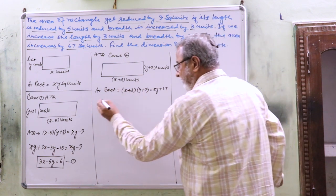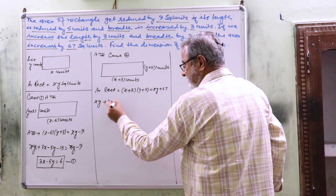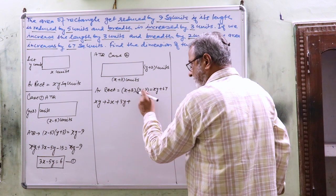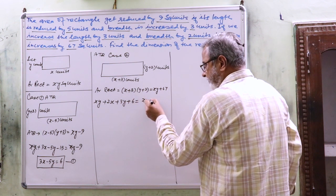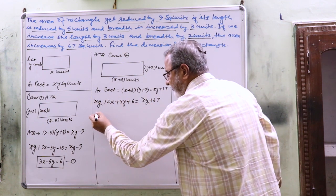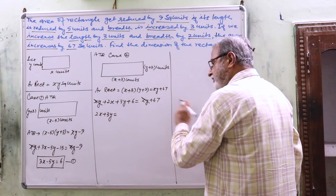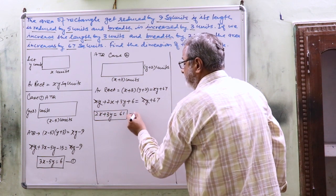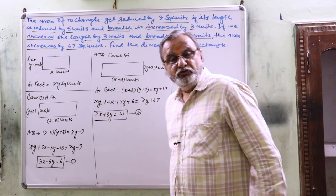Expanding: x multiplied with y gives xy, x multiplied with 2 gives 2x, 3 multiplied with y gives 3y, and 3 multiplied with 2 gives 6, and that equals xy plus 67. So 2x plus 3y equals 61. This is equation 2.